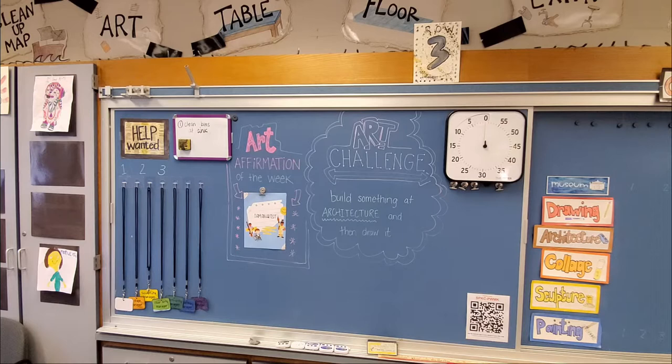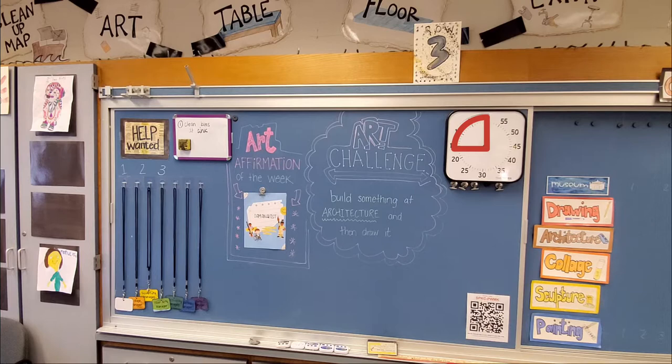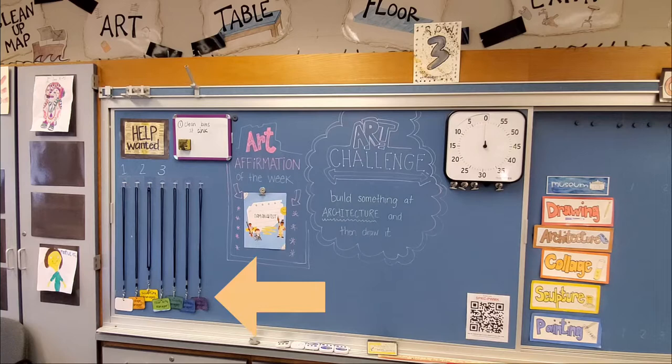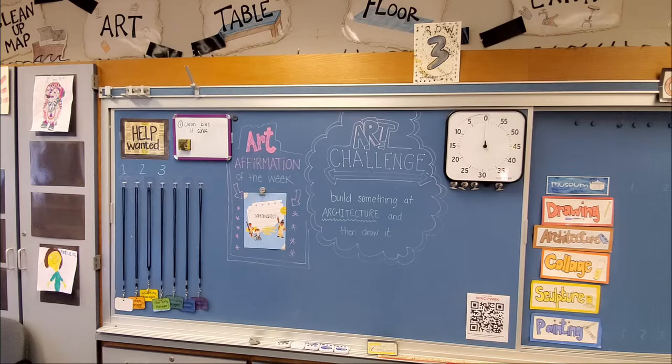This week's challenge is to build something in architecture and then draw it. In the top right corner we have a visual timer — when I turn it, it creates a red section so kiddos know how much time they have left. Below that is our Artsonia code so students can scan and log right in. And then these badges are manager tags — each center will have a manager with one specific task, like the clay manager spritzing clay with water or the sculpture manager providing masking tape.